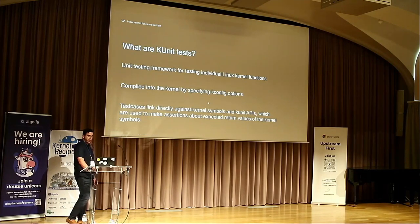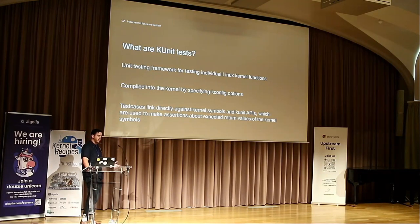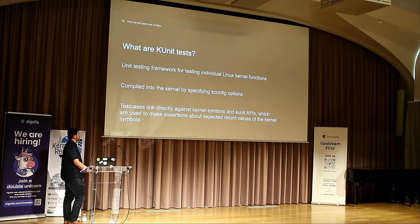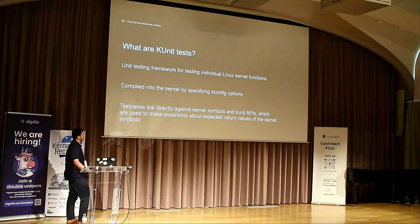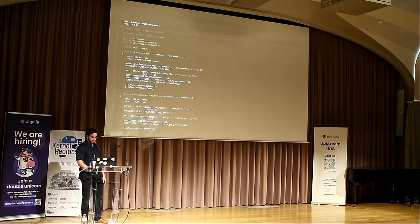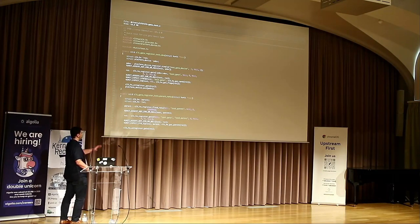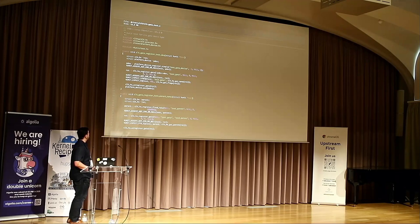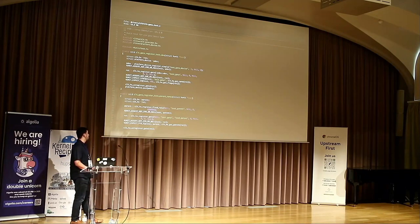Moving on, we also have KUnit tests. As you probably guessed, this is more of a unit testing framework. Unlike selftests where you're compiling a user space program, calling system calls, issuing IOCTLs, and loading modules, this code is actually compiled directly into the kernel. The idea is that you link against symbols in the kernel and then KUnit gives you APIs that let you assert what you expect from calling those functions. You specify whether you want to include that code with kconfig like any other object file. They have KUnit assertions, you actually call symbols that are directly part of the kernel. This code lives with the code that it's testing — usually there's a test.c file with the subsystem.